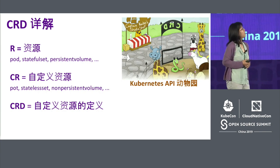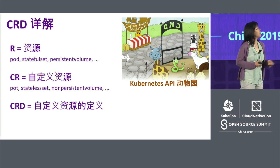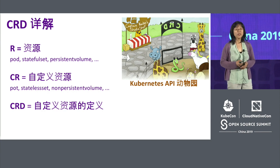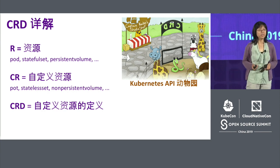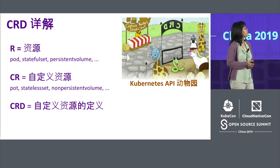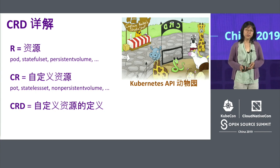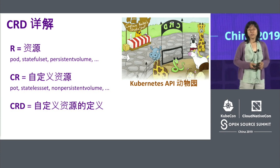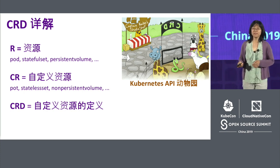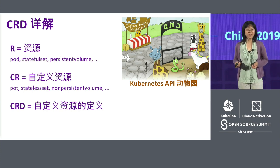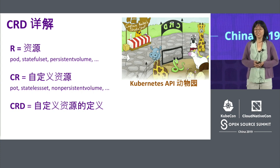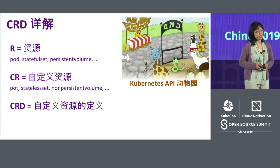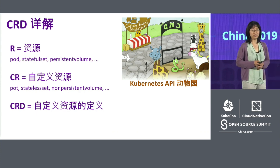So here it is. First, we call them resources — the APIs already in Kubernetes core, like pod, replica set, deployment. If you want to define something new on your own, we have custom resources. You can define any way you like — something really weird, like a pod city lab set or non-processed module. And CRD, custom resource definition, is used to define those custom resources.